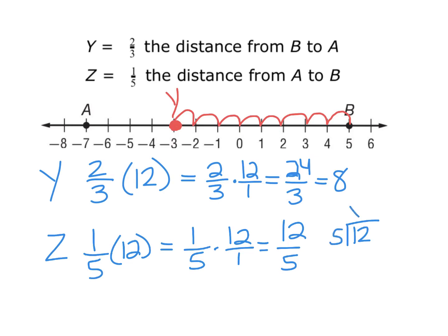Five goes into twelve two times. I'll add a decimal and bring down a zero — five goes into twenty four times — so that's 2.4 units of distance. This time I'm going from A to B, so I go one, two, and then 0.4 wouldn't be quite halfway — it would be about right there. That's where I would put the location of Z.